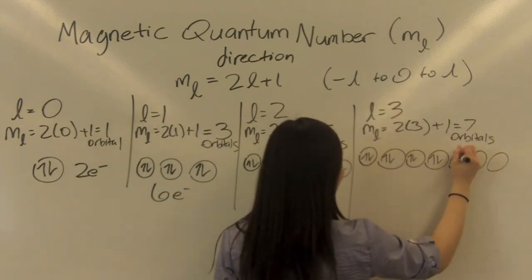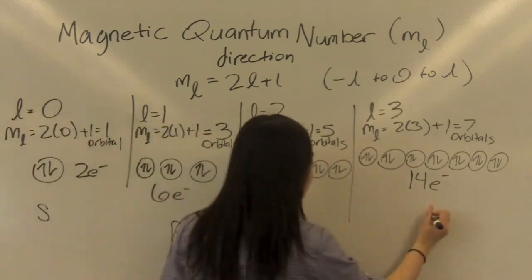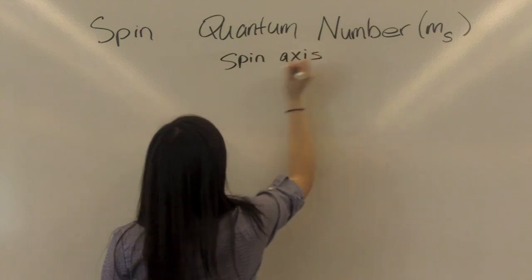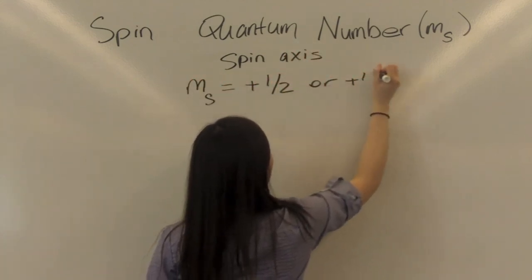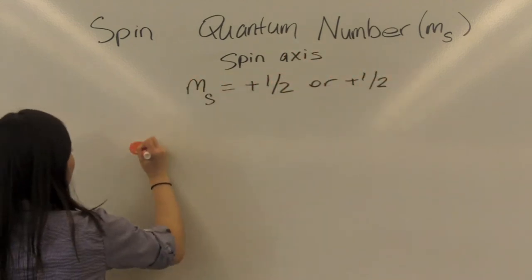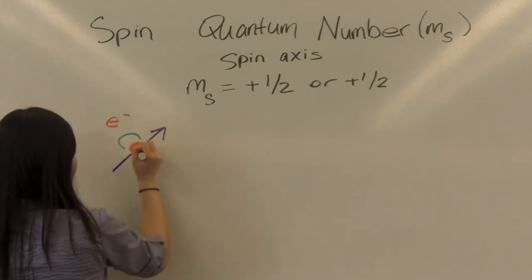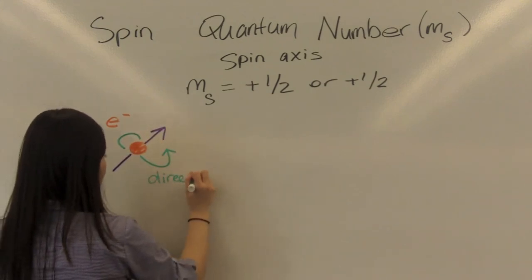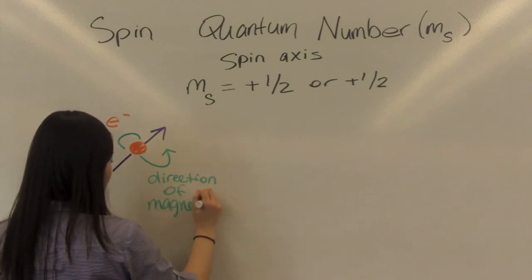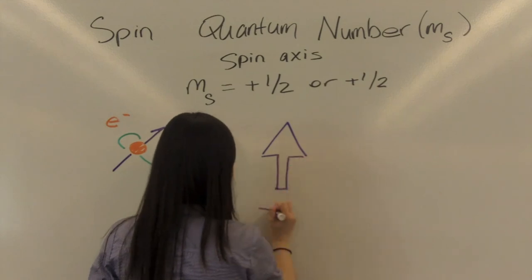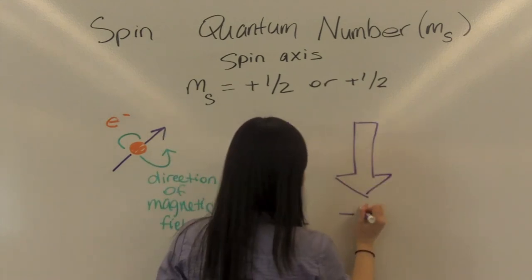There will be 2L plus 1 orbitals for each subshell. Spin quantum number describes the spin axis of an electron, of which there are only two possible orientations, positive 1 over 2 or negative 1 over 2. Positive 1 over 2 means the electron is spinning in the same direction as the external field, and negative 1 over 2 means the electron is spinning in the opposite direction as the external field.